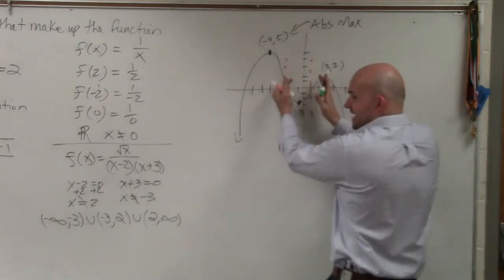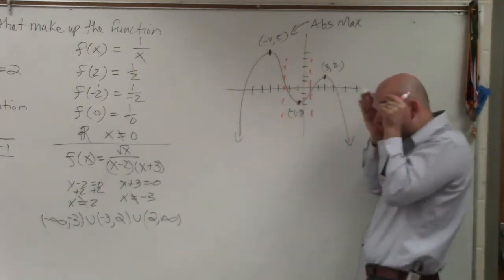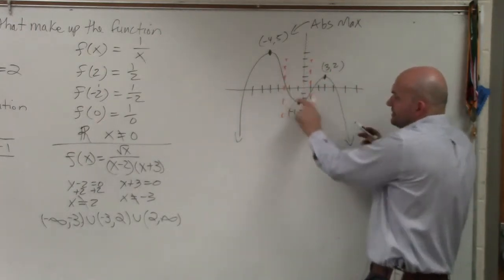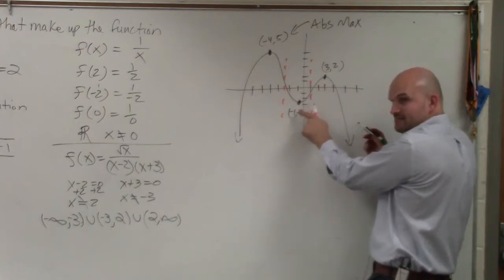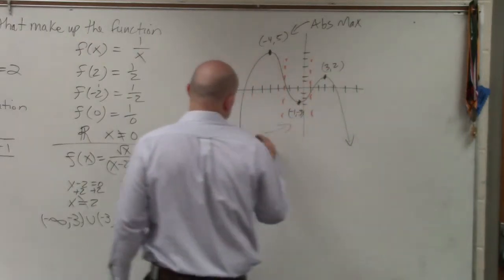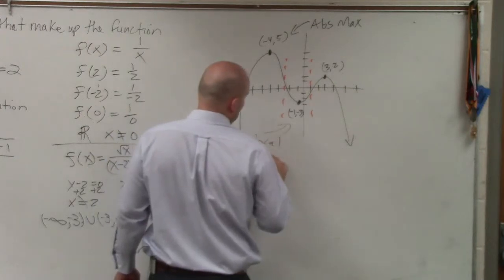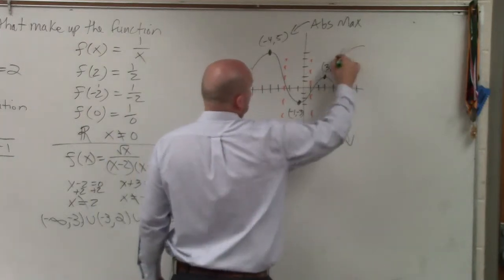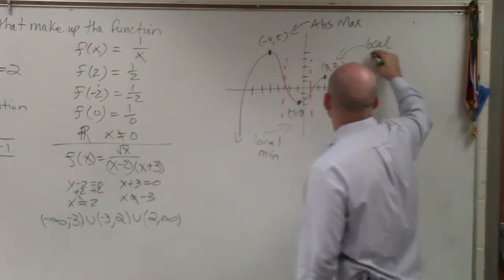So if you guys think of these dotted lines as a range that I want to focus in on, between this range of values, you can see that that's a minimum point. So it's called a local min. And this would be called a local max.